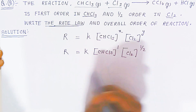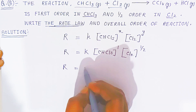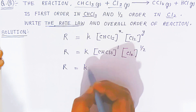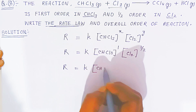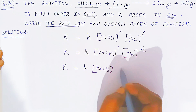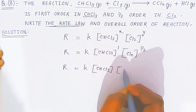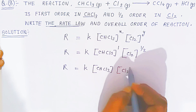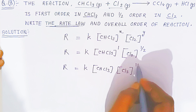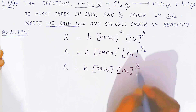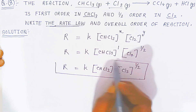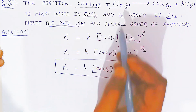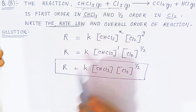So the rate law is: R = K × [CHCl₃] × [Cl₂]^(1/2). That is, rate equals K into concentration of chloroform multiplied by concentration of chlorine gas raised to the power of half. This is the rate law applied to these two reactants.